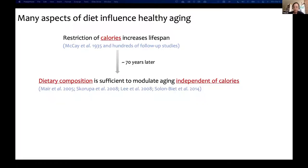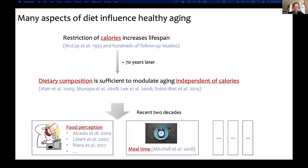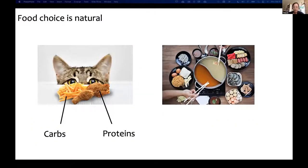It almost took 17 years until we realized that beyond calories, dietary composition is sufficient to modulate aging, thanks to studies on isocaloric diets and the nutritional geometry framework. In recent decades, increased evidence indicates many aspects of diet influence aging and health — including food perception, meal timing, and others. Today I'm going to focus on how food choice influences aging. Food choice is natural: animals seek carbohydrates and proteins to satisfy energy demands. On top of choosing specific nutrients, humans also make food choices based on taste and flavor.